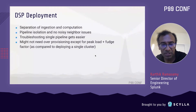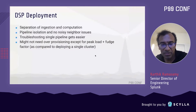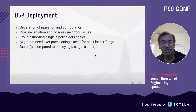The separation also gives each pipeline isolation, eliminating noisy neighbor issues. Troubleshooting a single pipeline becomes easier, and because of the isolation we don't need to over-provision — except for peak load and some fudge factor for spikes.